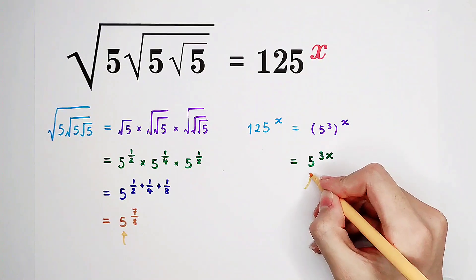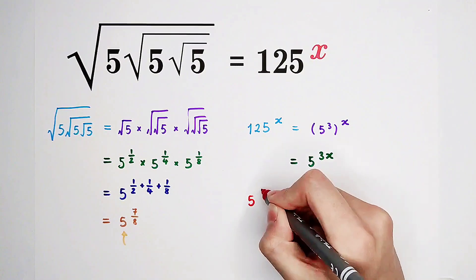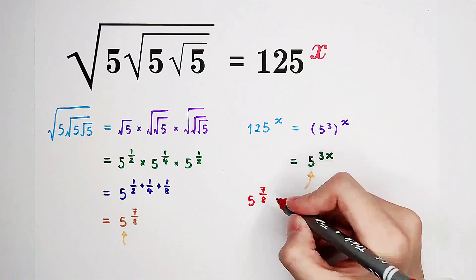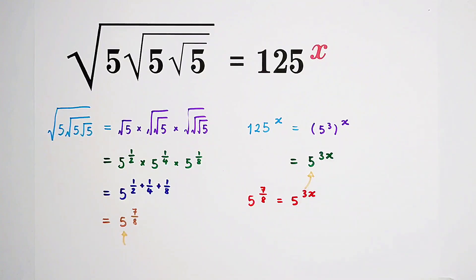Then from these two guys we can get an equation: 5 to the power of 7 eighths equals 5 to the power of 3x. They have the same base. What can we do if we have the same base on both sides? Then automatically the exponents will be equal. 7 eighths equals 3x.